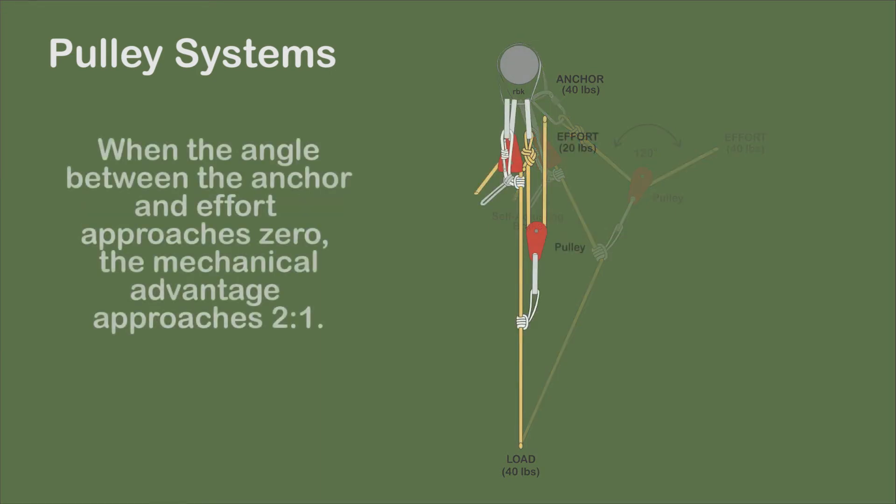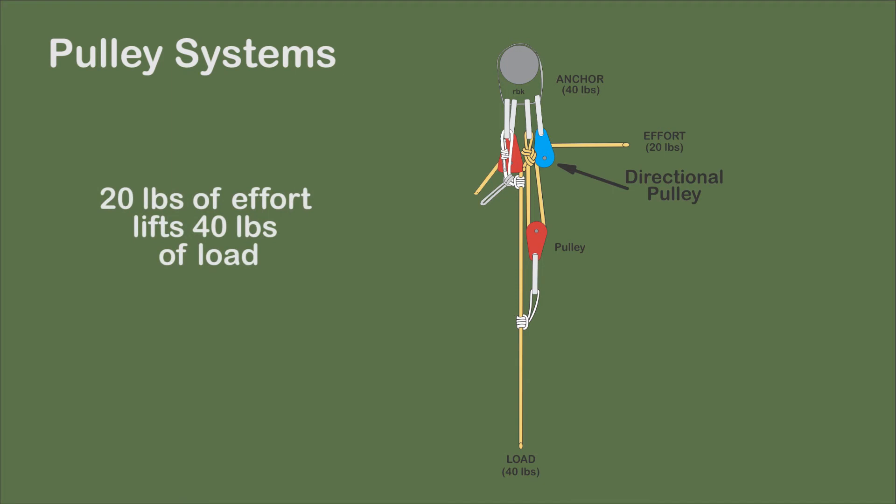As the angle between the anchor and the effort decreases, the mechanical advantage approaches the theoretical 2:1 ratio. A directional pulley minimizes the angle and maximizes the mechanical advantage.